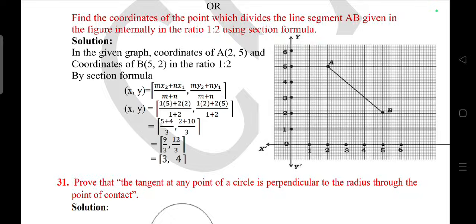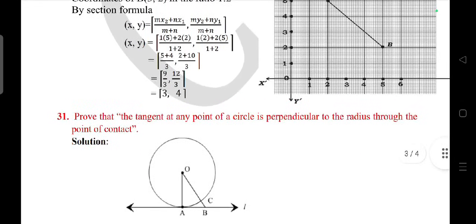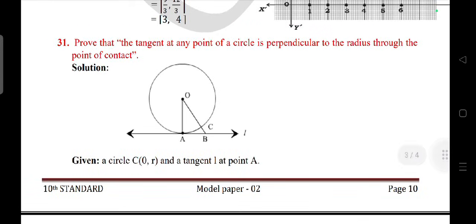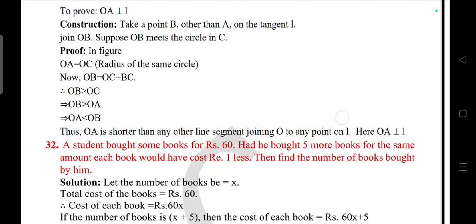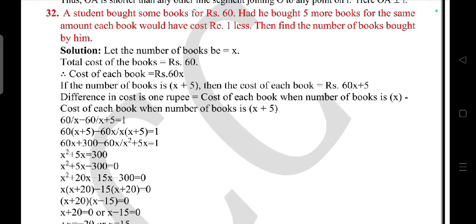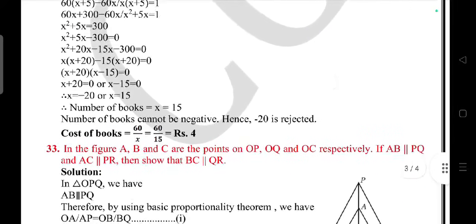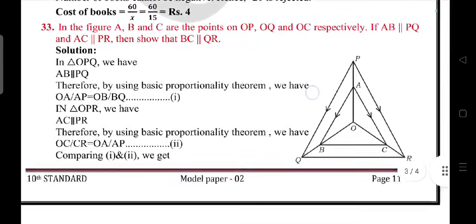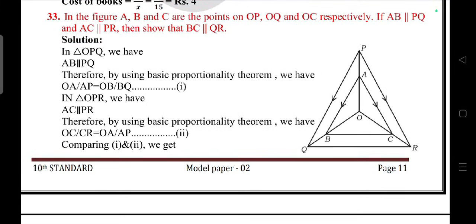Prove that tangent at any point of a circle is perpendicular to radius at the point of contact. This is from circle chapter. The student bought some books for rupees 60. Had he bought five more books for the same amount, each book would have cost rupees one less. Find the number of books bought by him. In the given figure, A, B, C are points on OP, OQ, and OR respectively. If AB parallel to PQ and AC parallel to PR, then show that BC parallel to QR. Take triangle, prove that these two triangles are equal.